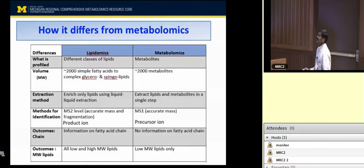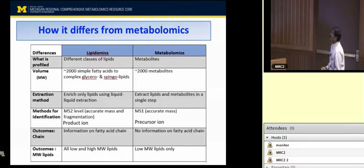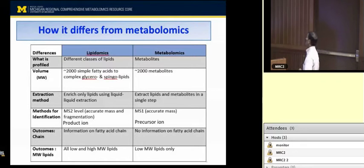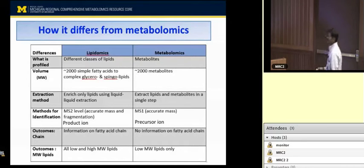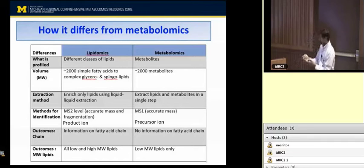Ceramides and sphingomyelin come under sphingolipids. Ceramides readily undergo dehydration because of the sphingoid backbone — it readily undergoes dehydration to give m/z 264 as a major fragment due to loss of two water molecules and the SN2 fatty acid chain. Sphingomyelin exhibits m/z 184 as a major peak, similar to phosphatidylcholine, because both contain phosphocholine as a head group — so this 184 corresponds to loss of phosphocholine. Steryl lipids exhibit m/z 364 as a major fragment corresponding to the cholecalciferol moiety, producing 366 and 368 fragments.